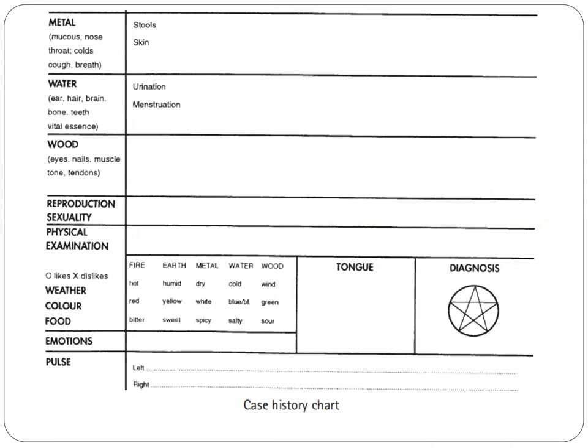For water, we ask about the ears, any hearing deficiency, hair quality, and brain function. We ask about the bones, teeth, and vital essence. We also need to ask about urination and the description of menstruation.